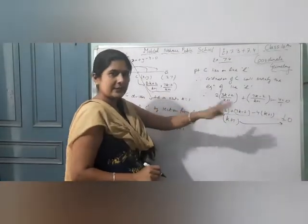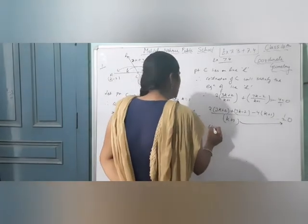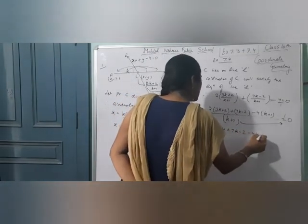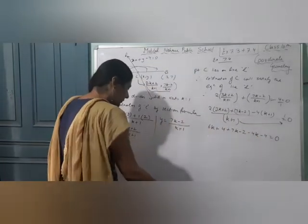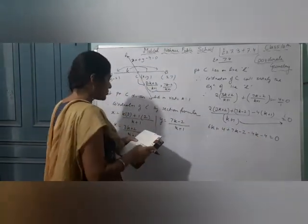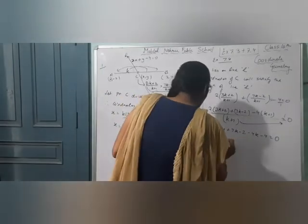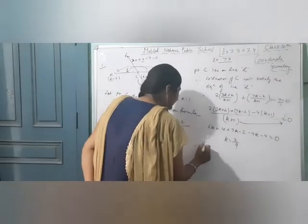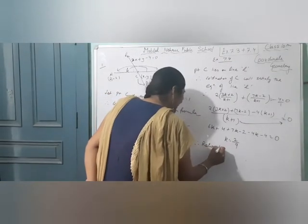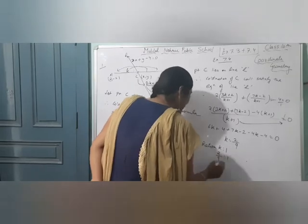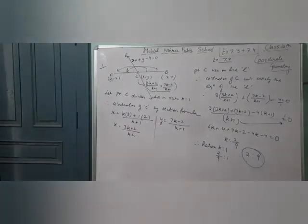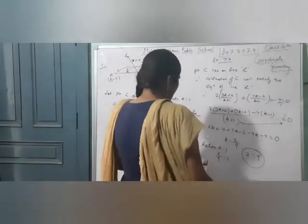Taking LCM (k+1), simplifying: 6k + 4 + 7k - 2 - 4(k+1) = 0, which gives 13k + 2 - 4k - 4 = 0. Solving for k gives k = 2/9. So the ratio is 2:9. This is your answer.